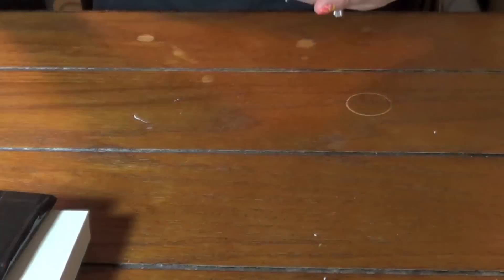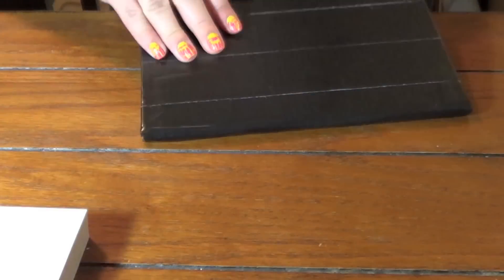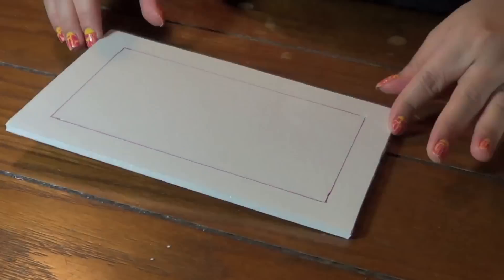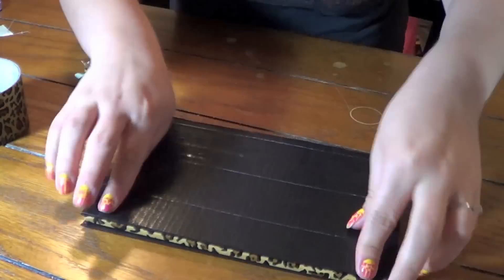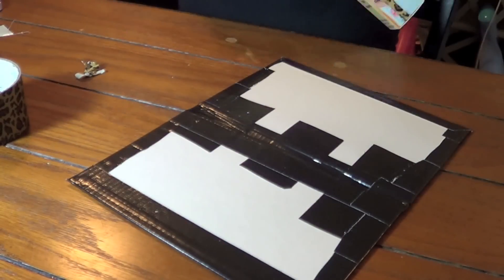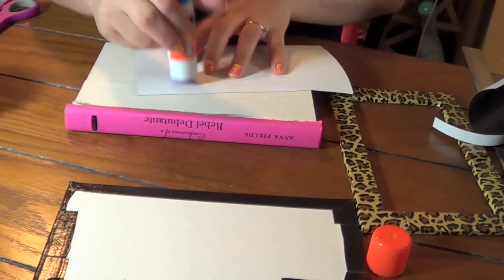So be careful that you don't cut your table because I've ruined my table, as you can tell, with nail polish remover and the scissors and stuff. So then you want to draw the lines for how big you want the frame to be and then put duct tape on it. It's going pretty fast.